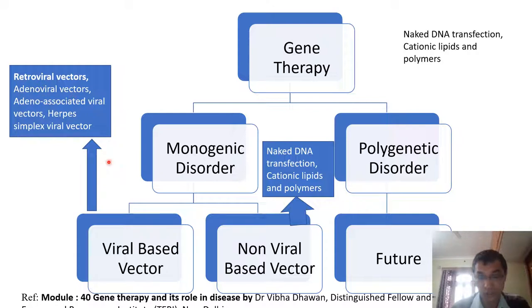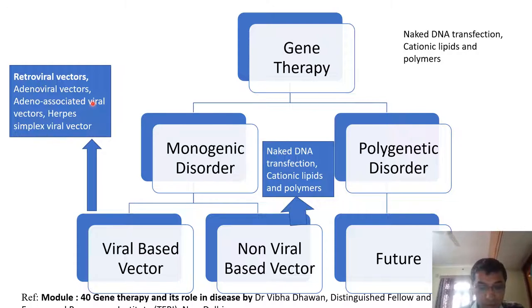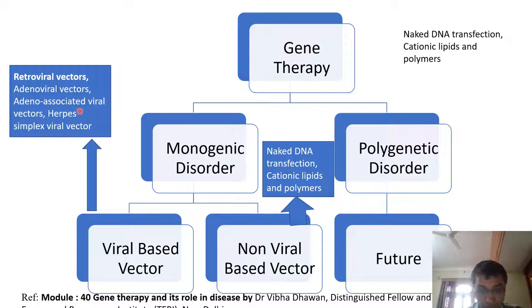The next set is adeno-associated viruses (AAV). These are small viruses and they depend on adenoviruses for their replication process.